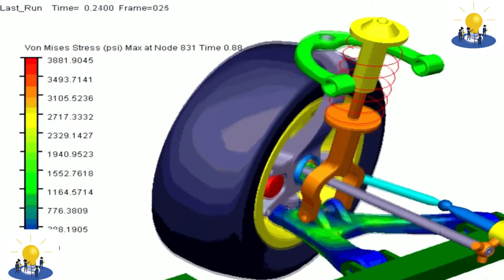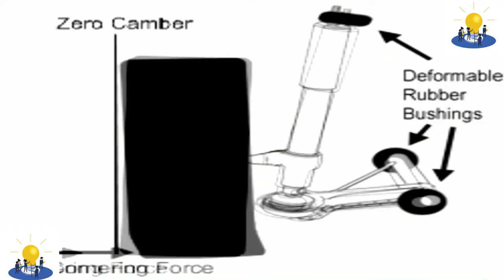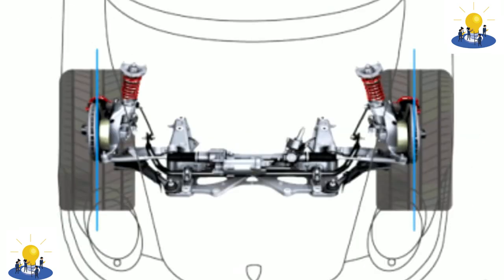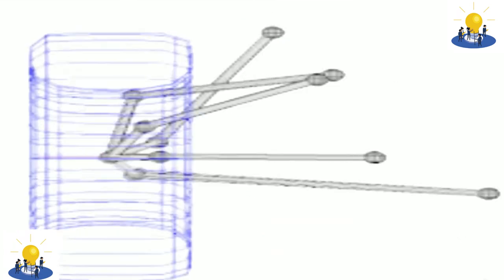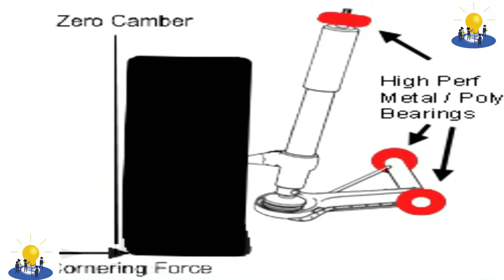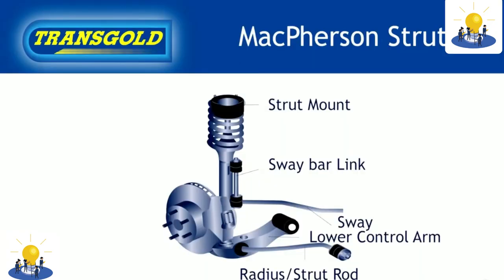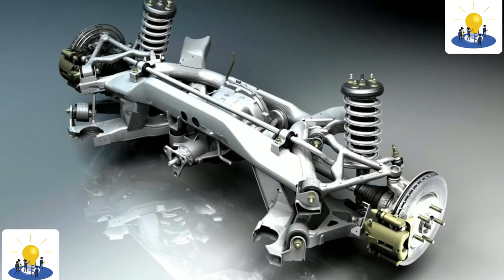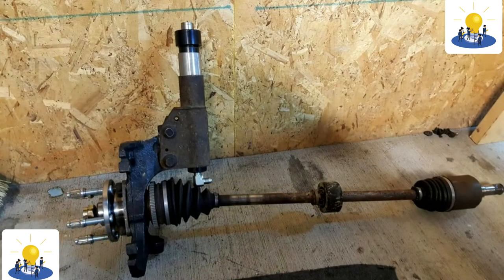The MacPherson strut is a type of automotive suspension system that uses the top of a telescopic damper as the upper steering pivot. It is widely used in the front suspension of modern vehicles and is named for American automotive engineer Earl S. MacPherson. A MacPherson strut uses a wishbone or a substantial compression link stabilized by a secondary link, providing a mounting point for the hub carrier or axle of the wheel. This lower arm system provides both lateral and longitudinal location of the wheel. The upper part of the hub carrier is rigidly fixed to the bottom of the outer part of the strut, which extends upwards directly to a mounting in the body shell. The line from the strut's top mount to the bottom ball joint gives the steering axis inclination.